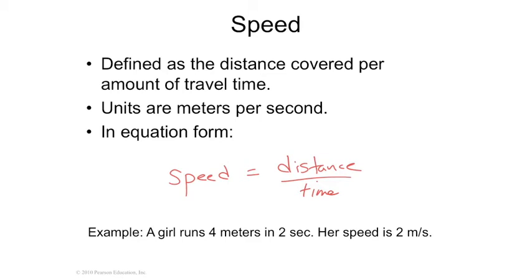So speed is defined as distance divided by time. Here's an example: a girl runs four meters in two seconds, so the distance is four meters, her time is two seconds. So four meters divided by two seconds is four divided by two, which is two, and then your answer has to be in that speed or velocity, which is meters over seconds.